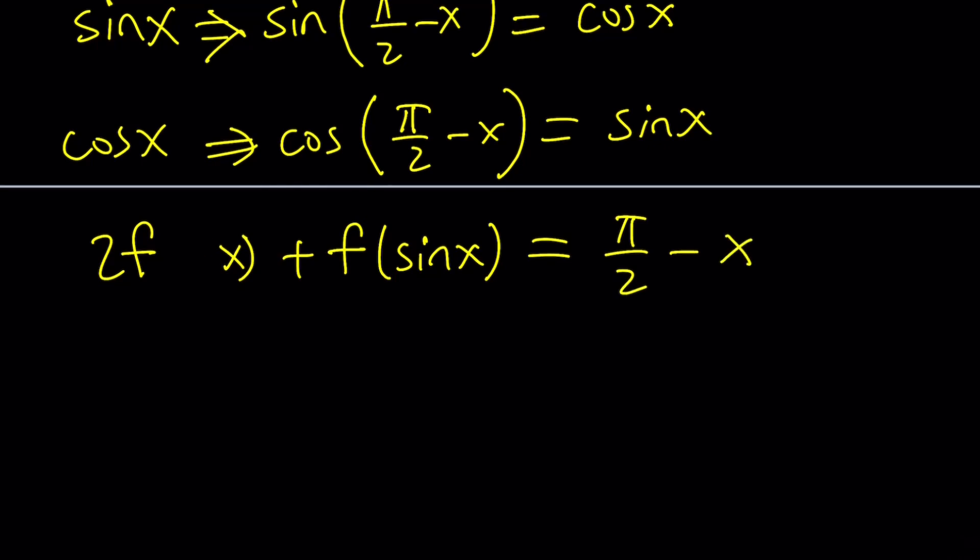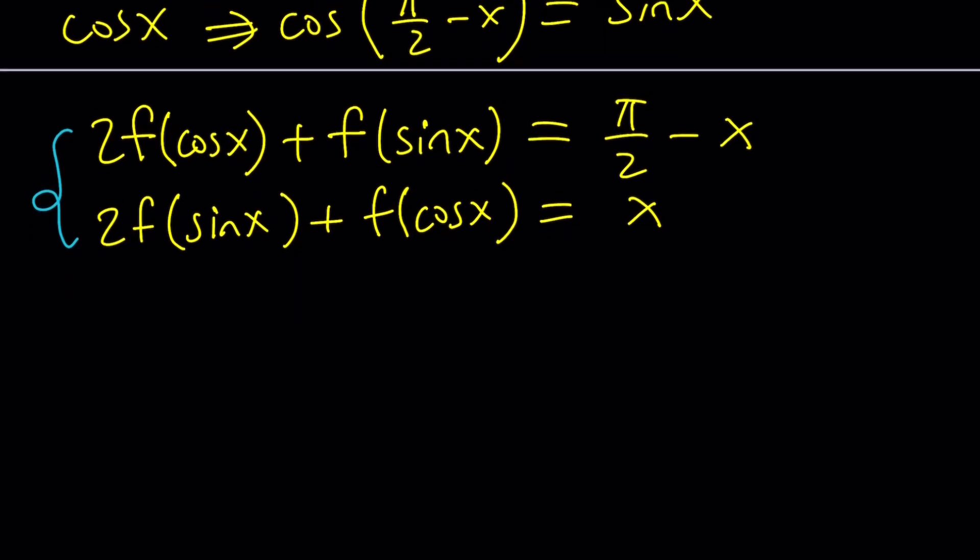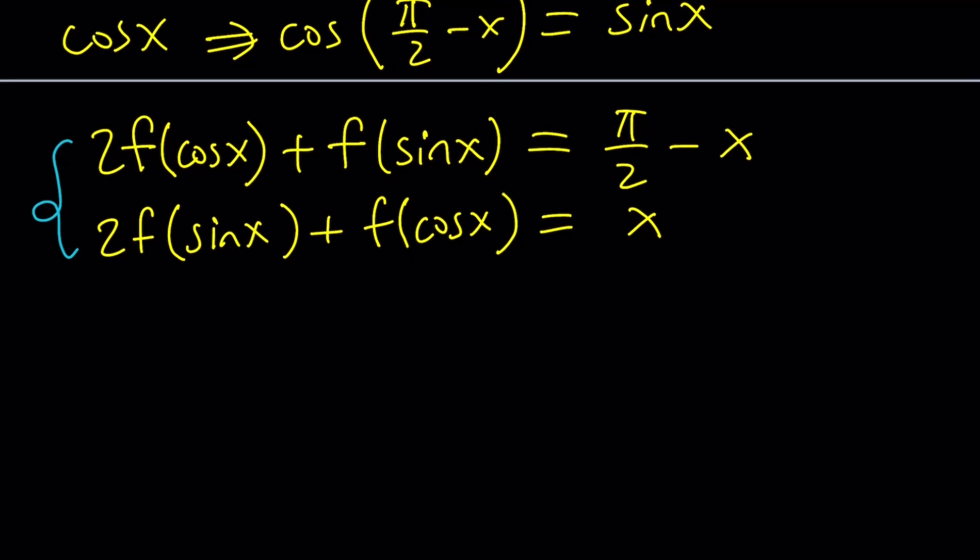Let's fix this. 2f of cosine x. What is the original equation? It is 2f of sine x plus f of cosine x equals x. Remember, the original equation turned into something like this when we replace x with pi over 2 minus x. So sine x and cosine x basically switched roles. Now we got a system of equations in two variables, so we can solve for one of the variables. Let's eliminate f of sine x.